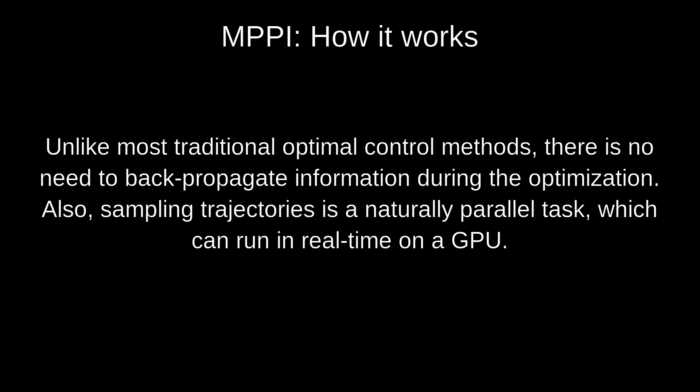Unlike most traditional optimal control methods, there's no need to back-propagate information during the optimization. Also, sampling trajectories is a naturally parallel task, which can run in real-time on a GPU.